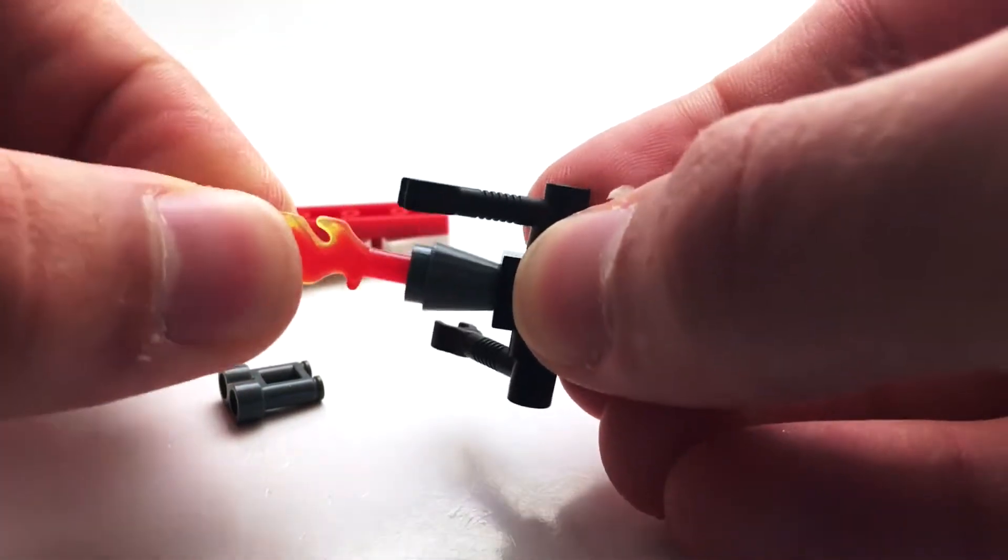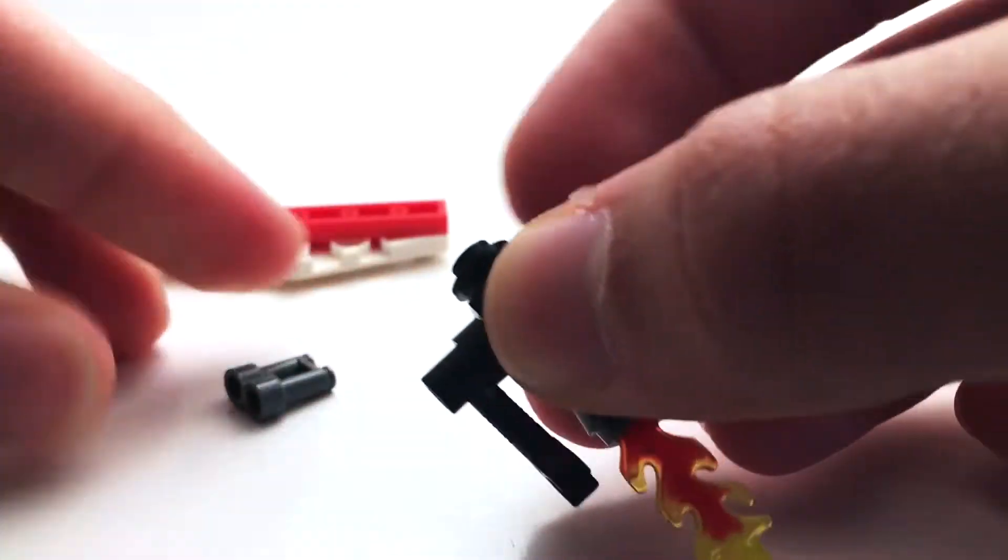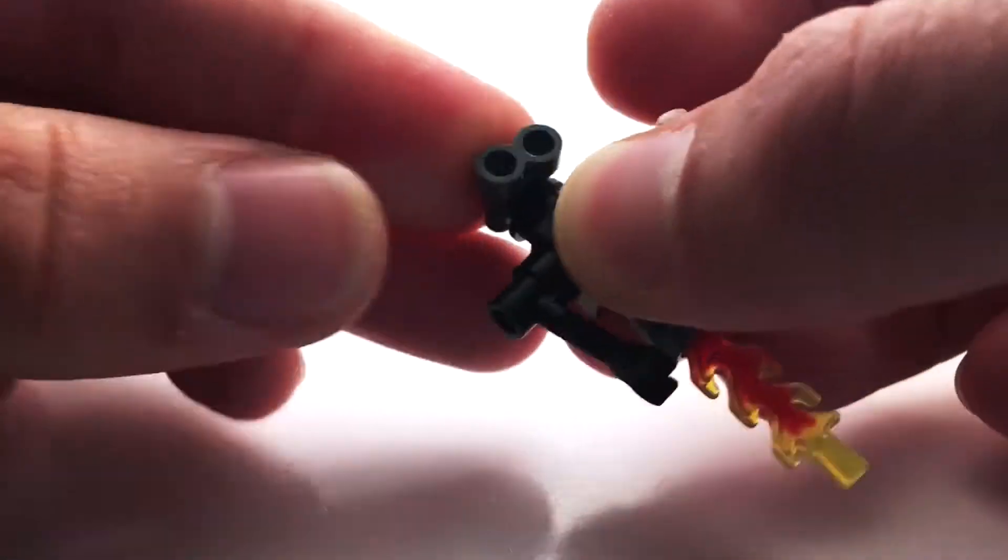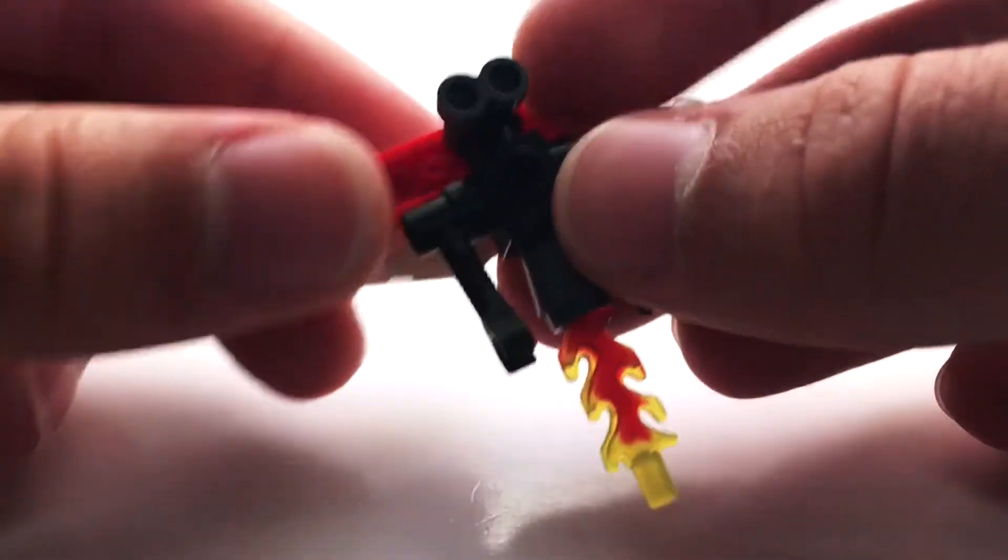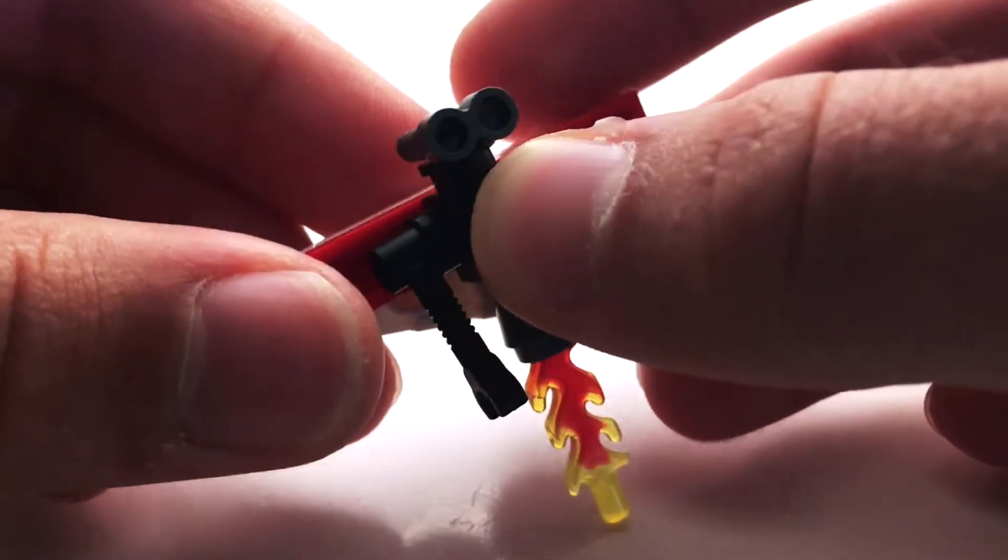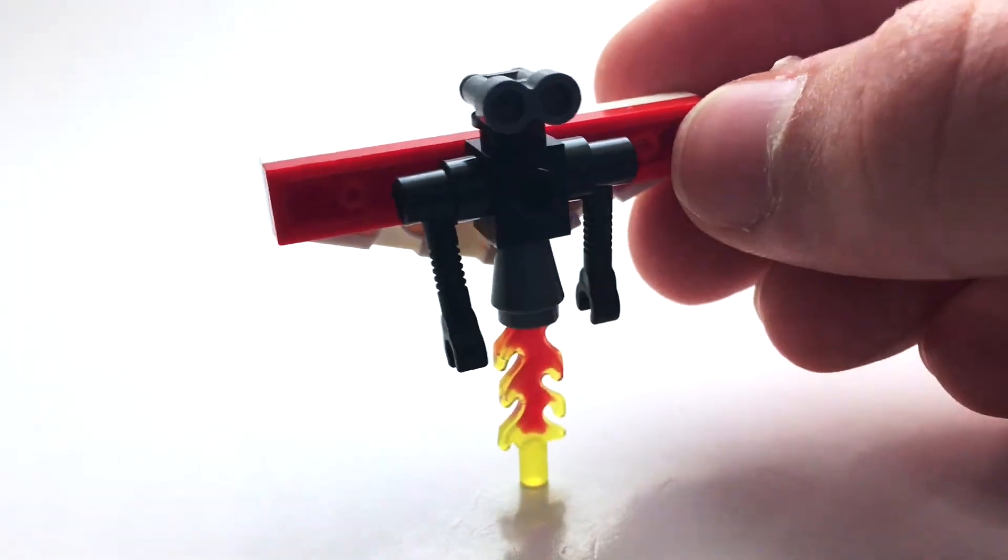And then the head is created with this binocular piece on top of this 1x1 round piece there, kind of like eyes. And then we have the wings that just attach on right there and complete the model.